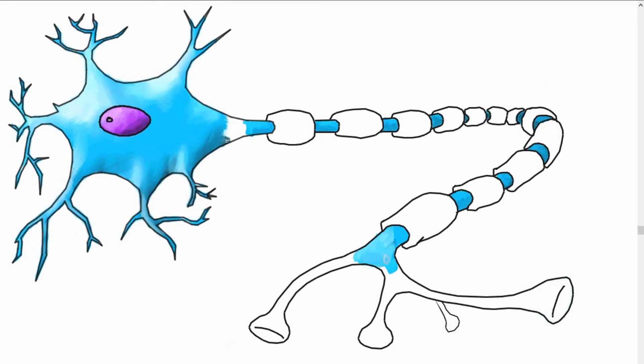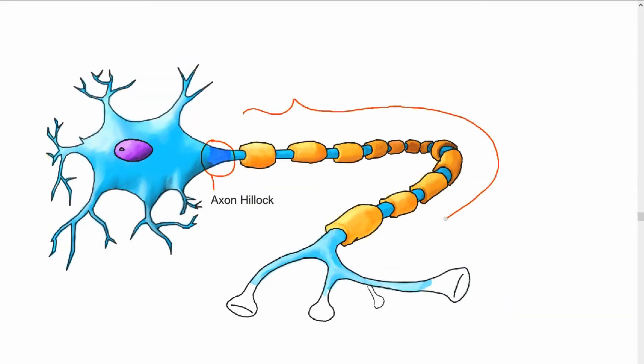Now at the base of the soma, we have this long protuberance called the axon. The axon begins with the region at the base of the soma called the axon hillock. As you've guessed, the purpose of the axon is to transfer information, or electrical signals, as we see with these arrows. A signal comes down from the dendrites, through the soma and axon hillock, and down the axon to the end.